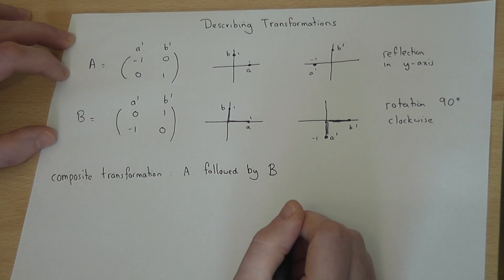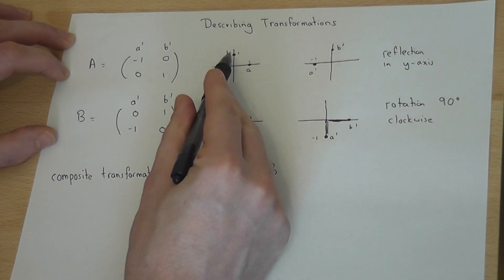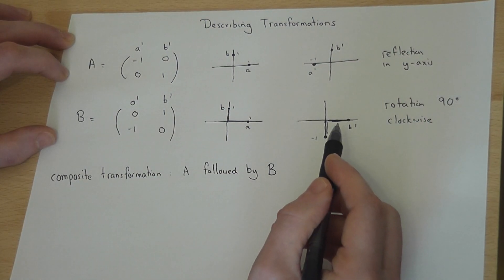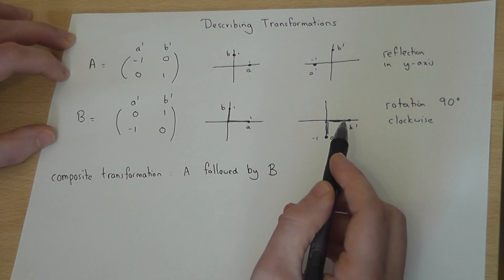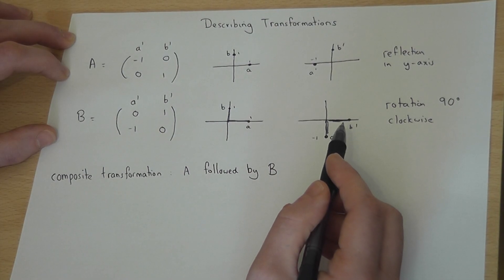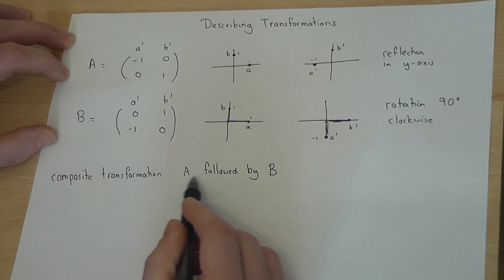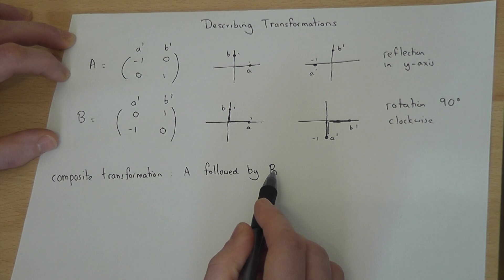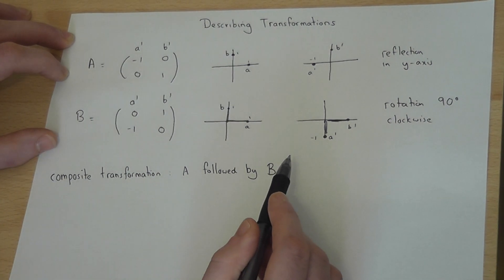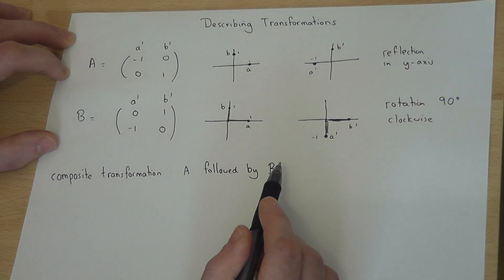So they're two separate transformations. And those golden rules about what happens to A and B always apply to any matrix. We can also have composite transformations, A followed by B. And we can work out the single matrix to represent this by doing the following.